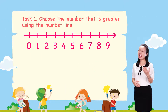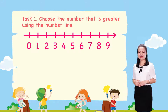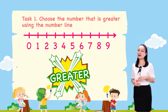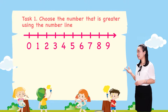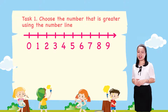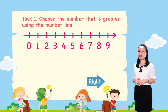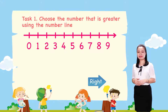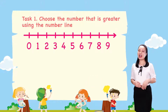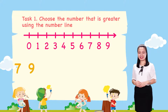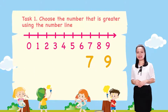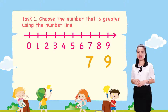Now, let's find the answers together. To choose the number that is greater, first look at the number line, then decide which number is to the right of the other. For the pair 7 and 9, number 9 is to the right of number 7. So 9 is greater.